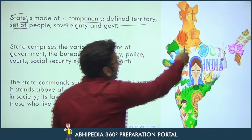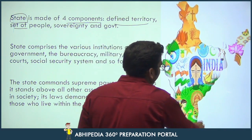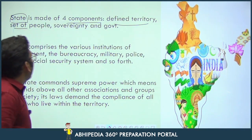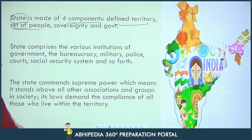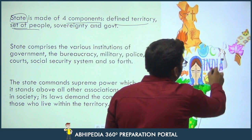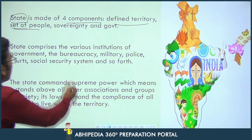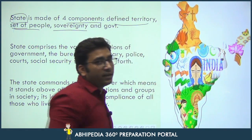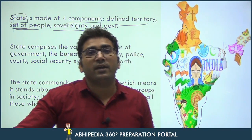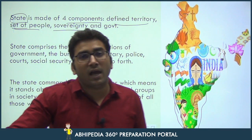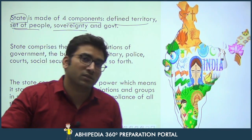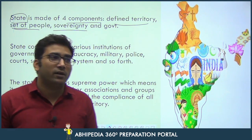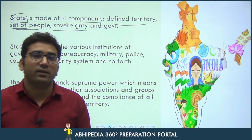The first component is defined territory — a united and integrated territory. The second is a set of people, the population. The third is sovereignty, which means that this state has the independence to take its decisions at both the domestic as well as the international level without anyone's influence or pressure. This power is called sovereignty — the power of making decisions without being influenced or pressured by someone.